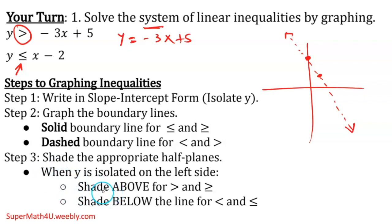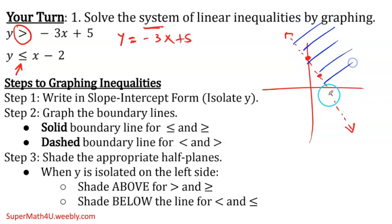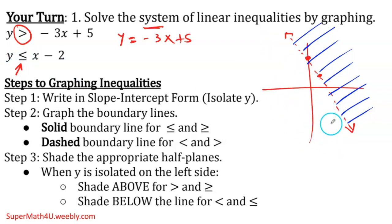After that, shade above when it's greater than or greater than or equal to, or shade below when it's less than or less than or equal to. I go back to the inequality symbol. Right now y is greater, so it's greater — shade above. So the shade would be on top of the line. In the second inequality it has less than, so the shade would be below.